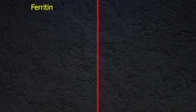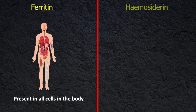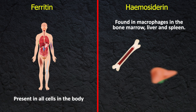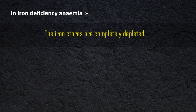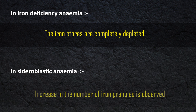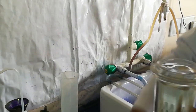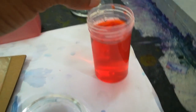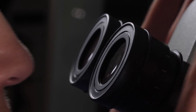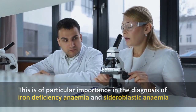Normally ferritin is present in all cells in the body, and hemosiderin is mainly found in macrophages in bone marrow, liver, and spleen. In iron deficiency anemia, the iron stores are completely depleted, while in sideroblastic anemia a prominent increase in the number of iron granules is observed in the bone marrow smear. By means of a cytochemical stain, the amount of stainable iron in the bone marrow can be visualized and quantitatively assessed.